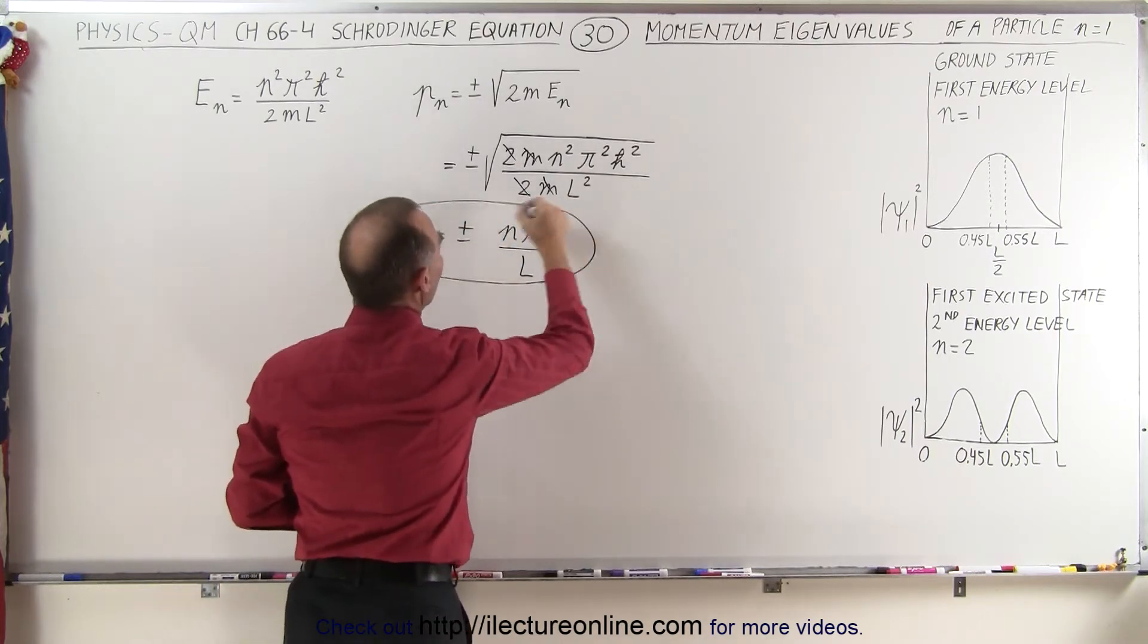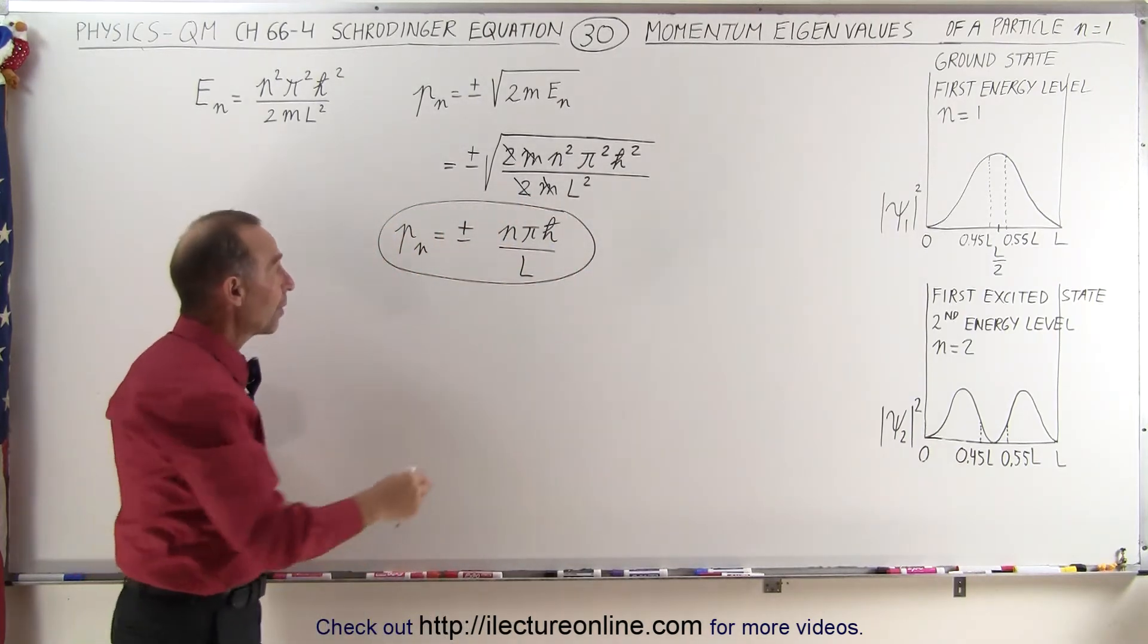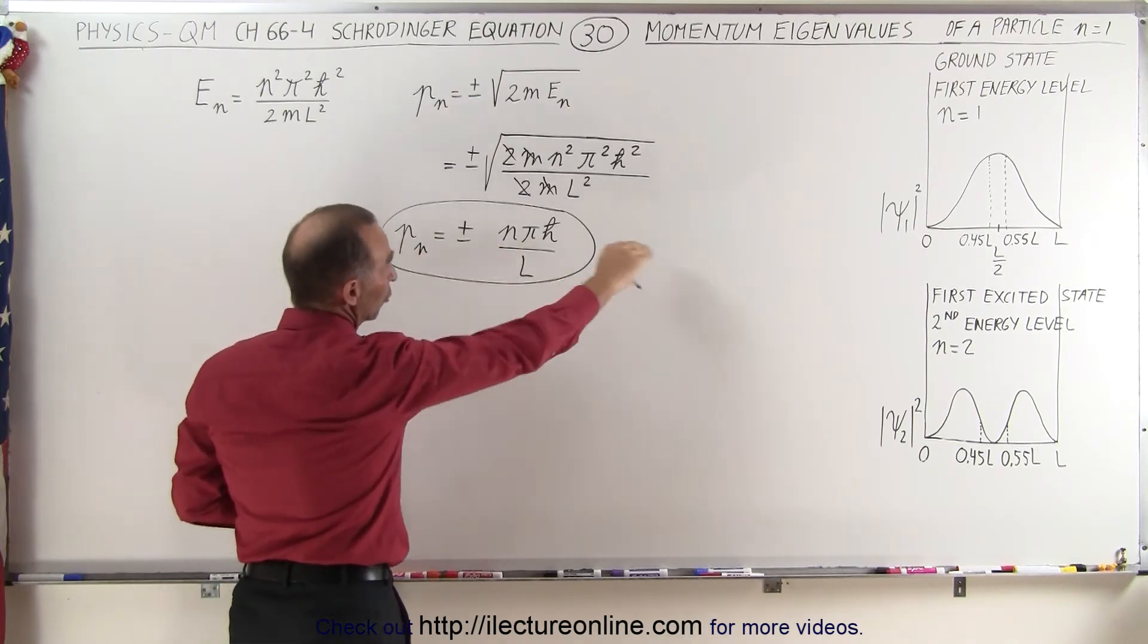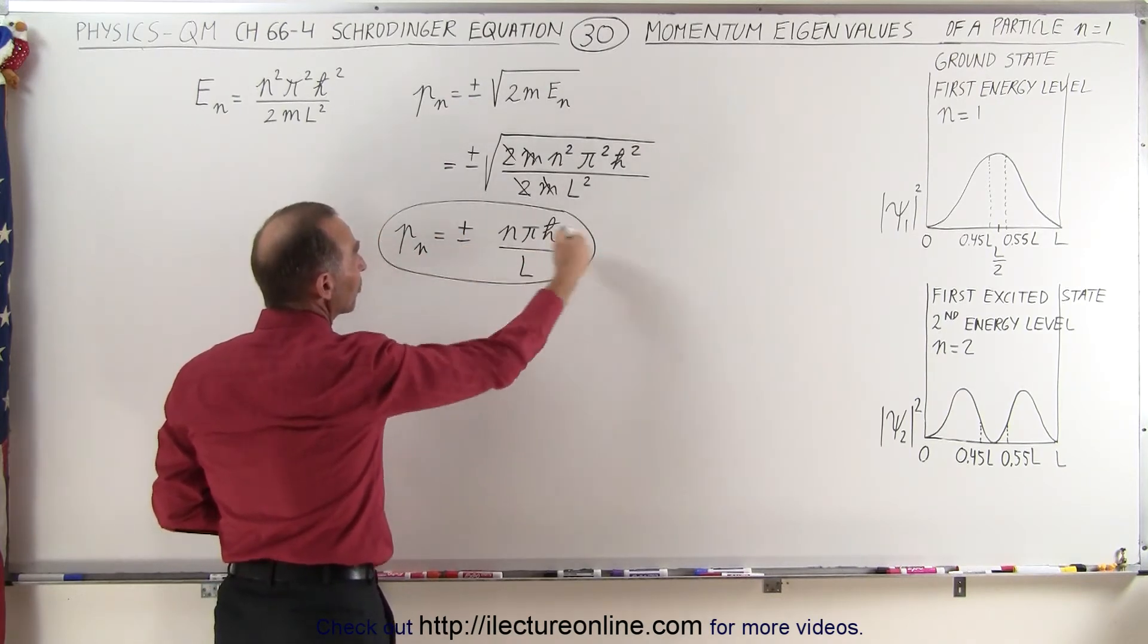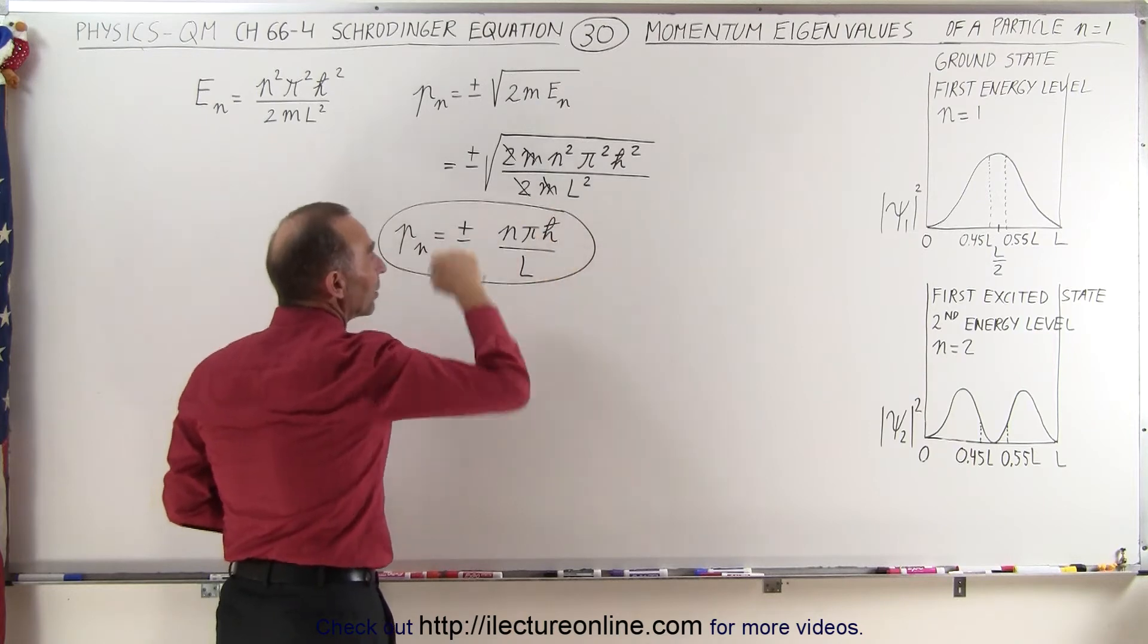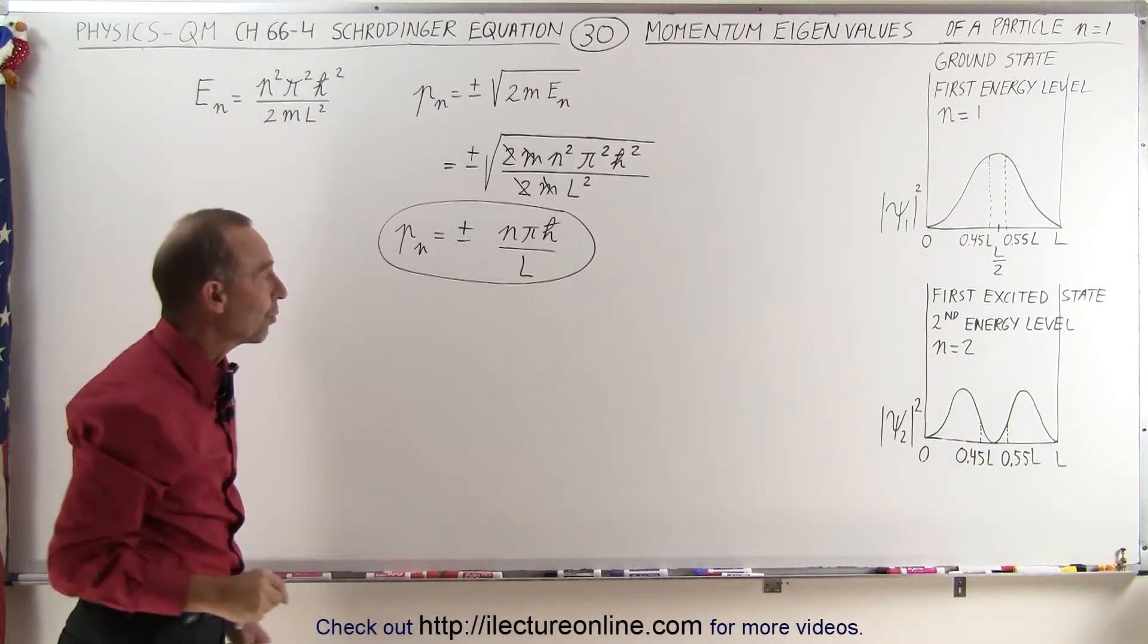And so here we have the two possible values for the momentum. We have the plus value for motion to the right and the negative value for motion to the left and this is then the actual value of the momentum in either direction.